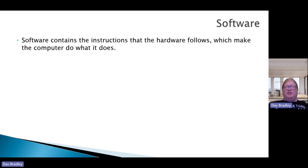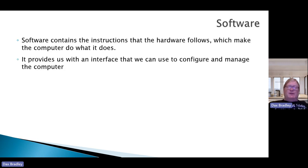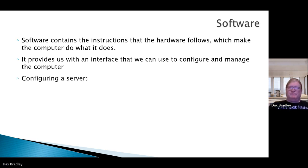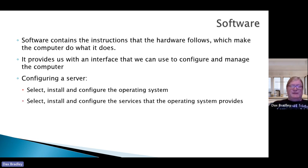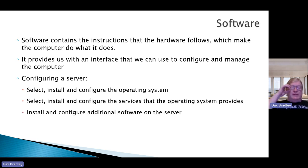Software contains the instructions that the hardware follows, which make the computer do what it does. Software provides an interface that can help you configure and manage the computer. When you configure the server, the first thing you want to do is select, install, and configure the operating system if it's not built in. Then install and configure the services that the operating system provides — it will vary depending on the use and needs of the system — and install and configure any additional software needed on the server.